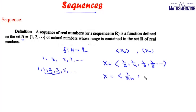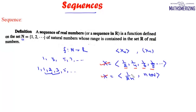The other way to express the sequence is writing it as 1/(2n) where n belongs to natural numbers. In the first case we defined the sequence as an ordered arrangement of numbers, and in the second case we defined it in terms of its nth term.